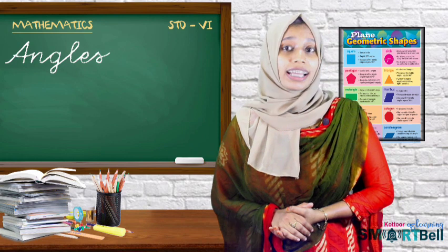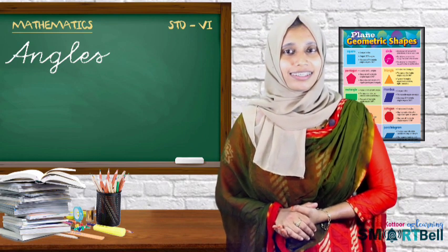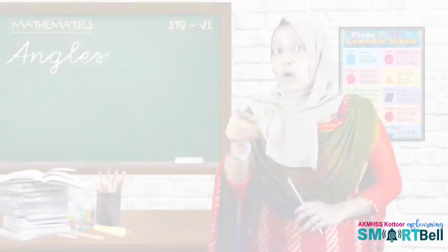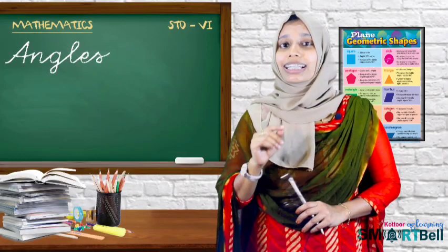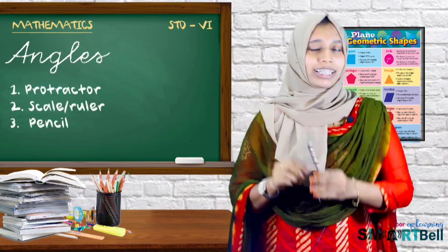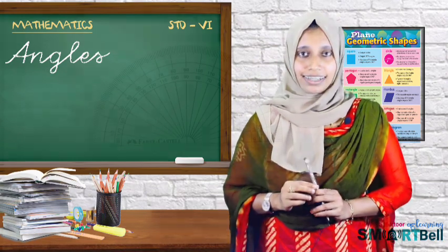As we know, for measuring an angle we are using a protractor. Let's see how we draw an angle by using a protractor. Hope you all have a geometry box. Then please take it out - a protractor, a scale, and a pencil. We need all of this for drawing an angle.